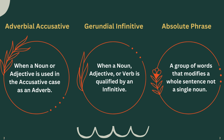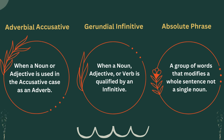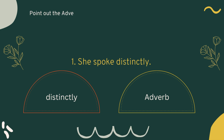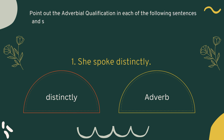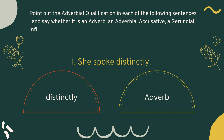and absolute phrase, because we have to point out these three in the exercise as well. So please pause the video, have a look at them, and then start watching. What we have to do is point out the adverbial qualification in each of the following sentences and tell whether it is an adverb or an adverbial accusative, a gerundial infinitive, or a group of words doing the work of an adverb,